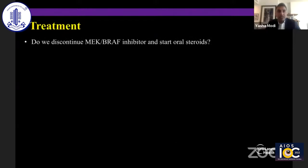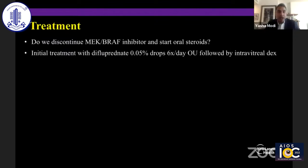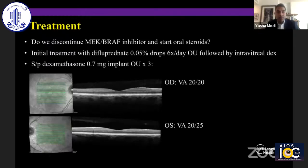The question is: do we discontinue MEK and BRAF inhibition and start oral steroids? It's really important to realize this is a life-sustaining treatment we don't want to withhold if we can. We opted for initial treatment with difluprednate six times a day, followed by intravitreal dexamethasone. I've been following her for about nine months, and notably she would not be alive without these treatments. She has received dexamethasone three times in both eyes, and her visual acuity is 20/20 in the right eye and 20/25 in the left.